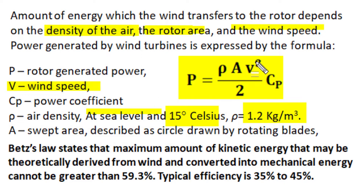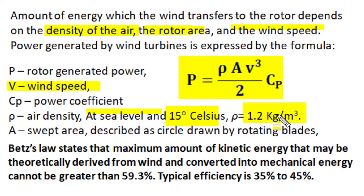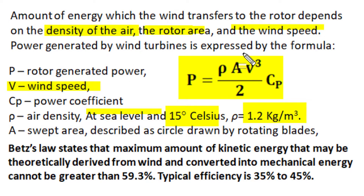Power output is proportional to the cubic power of wind velocity, meaning if wind velocity increases by 1%, the power output may increase by 3%. A is the sweep area — the circle drawn by the rotating blades. Cp is the power coefficient, which represents the utilization of wind kinetic energy to produce mechanical power at the rotor. The Betz limit states that the maximum fraction of kinetic energy of air that can theoretically be converted into mechanical output from a wind turbine cannot be greater than 59.3%.